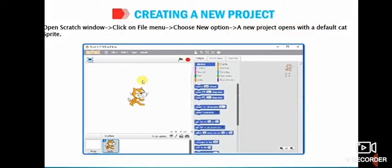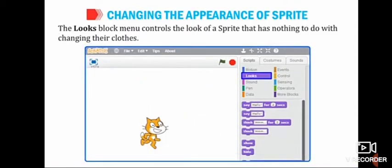Creating a new project: open Scratch window, click on File menu, choose New option. A new project opens with a default cat sprite. See on the screen, the default sprite is Cat, an orange cat. So, let us move to the next content.